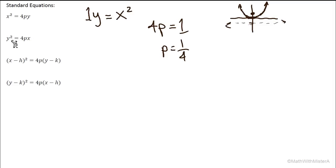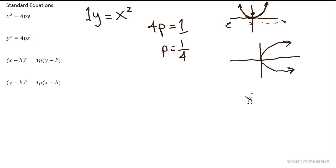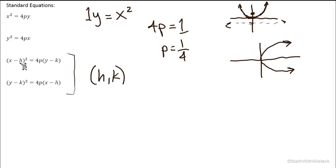Our second form, y squared equals 4p times x, is a parabola that is symmetric on the x-axis, opening to the right. Our last two forms are for cases where the vertex is not necessarily at the origin — the vertex is found at (h, k). Seeing it in this form, we can quickly identify the x and y coordinates of the vertex, as well as the quantity P, which describes the distance from the vertex to the focus and from the vertex to the directrix.